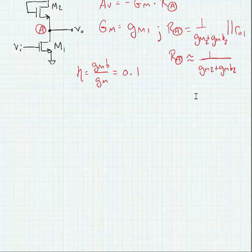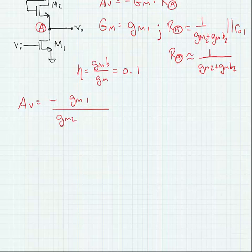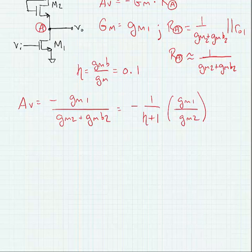Okay, so we can simplify our voltage gain expression AV to the following. Now let's note that these GMs are caused by current flowing through the transistors, so we can write this in terms of the current flowing through the transistors.